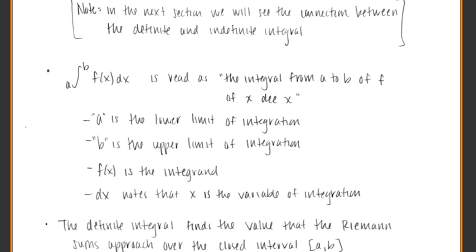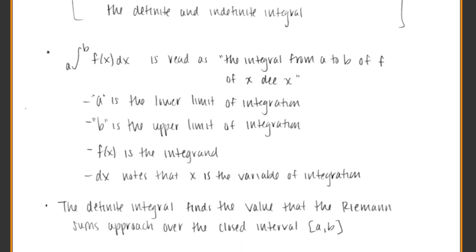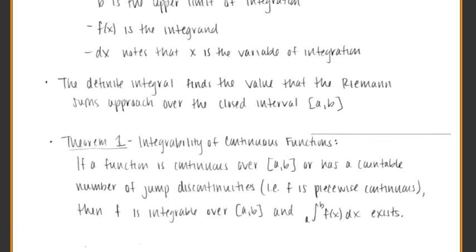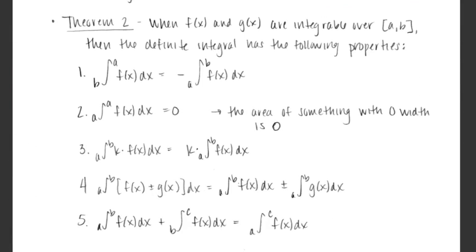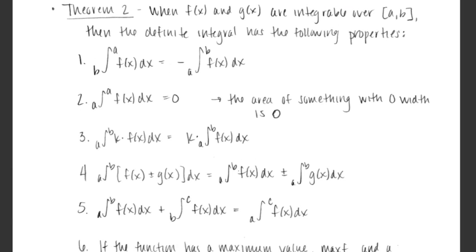Looking through these general notes, I really want to focus on Theorem number 2, which gives us some properties. If I do an integration from B to A and I want to swap it around to go from A to B, all I have to do is attach a minus sign out front.